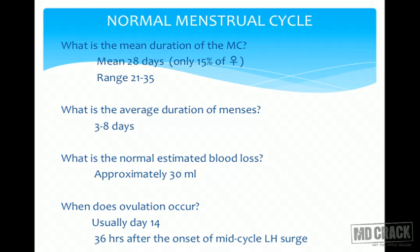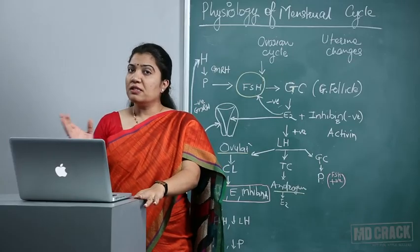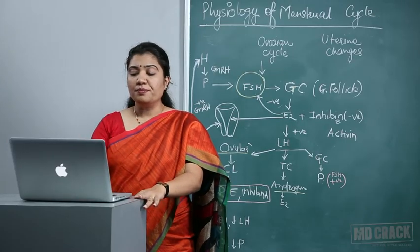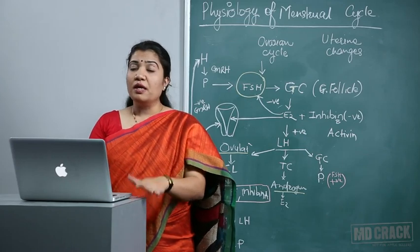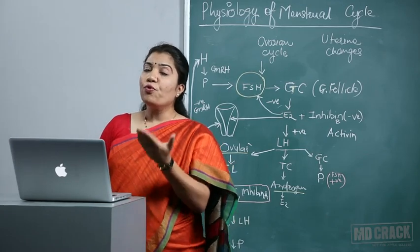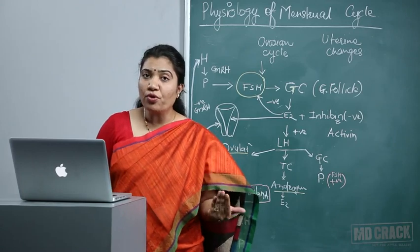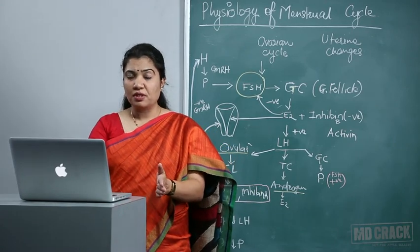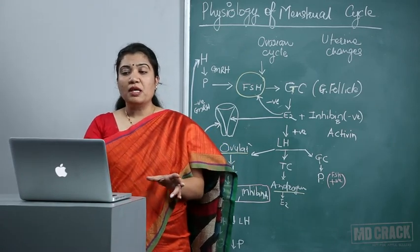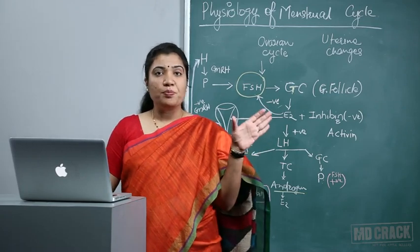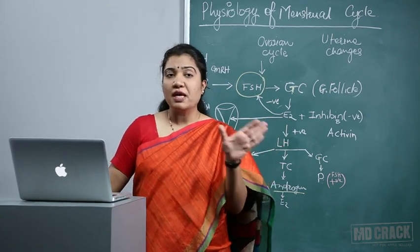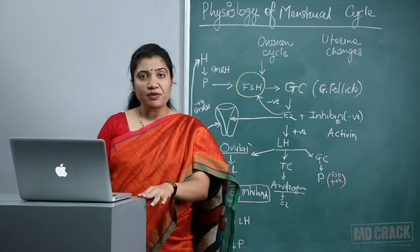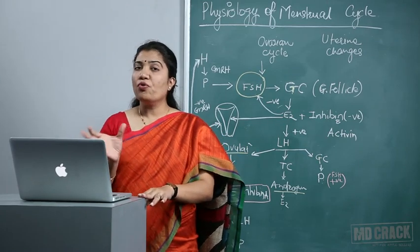Ovulation occurs 32 to 36 hours after the mid-cycle LH surge, or 10 to 12 hours before or after the LH peak. If cycles are irregular, ovulation occurs 14 days before the first day of menses. Always remember that the first phase — the proliferative or follicular phase — can vary, but the last luteal phase remains constant at almost 14 days.